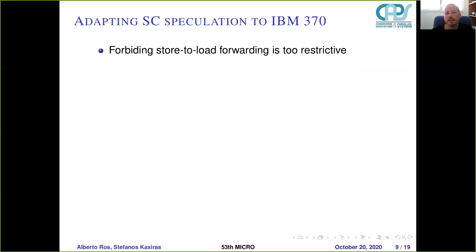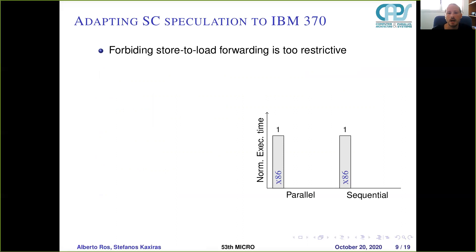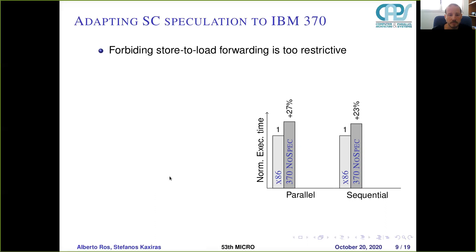We'll start the solution step by step. First, we show the performance cost of completely forbidding store-to-load forwarding, normalized against x86-TSO which allows it. In the IBM 370 baseline with no speculation, we get a 27% increase in execution time for parallel applications and 23% for sequential applications.